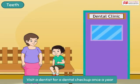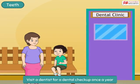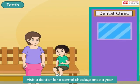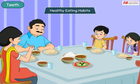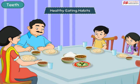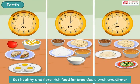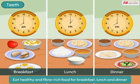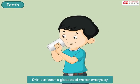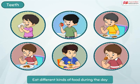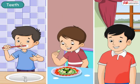Eat lots of fruits and vegetables and rinse your mouth after each meal. Visit a dentist for a dental check-up once a year, and also if you feel any discomfort in any tooth. Healthy eating habits help to keep the teeth fit and strong for a longer time. Eat healthy and fiber-rich food for breakfast, lunch, and dinner. Drink at least six glasses of water every day. Eat different kinds of food during the day. Remember to brush properly and eat healthy for shiny and strong teeth.